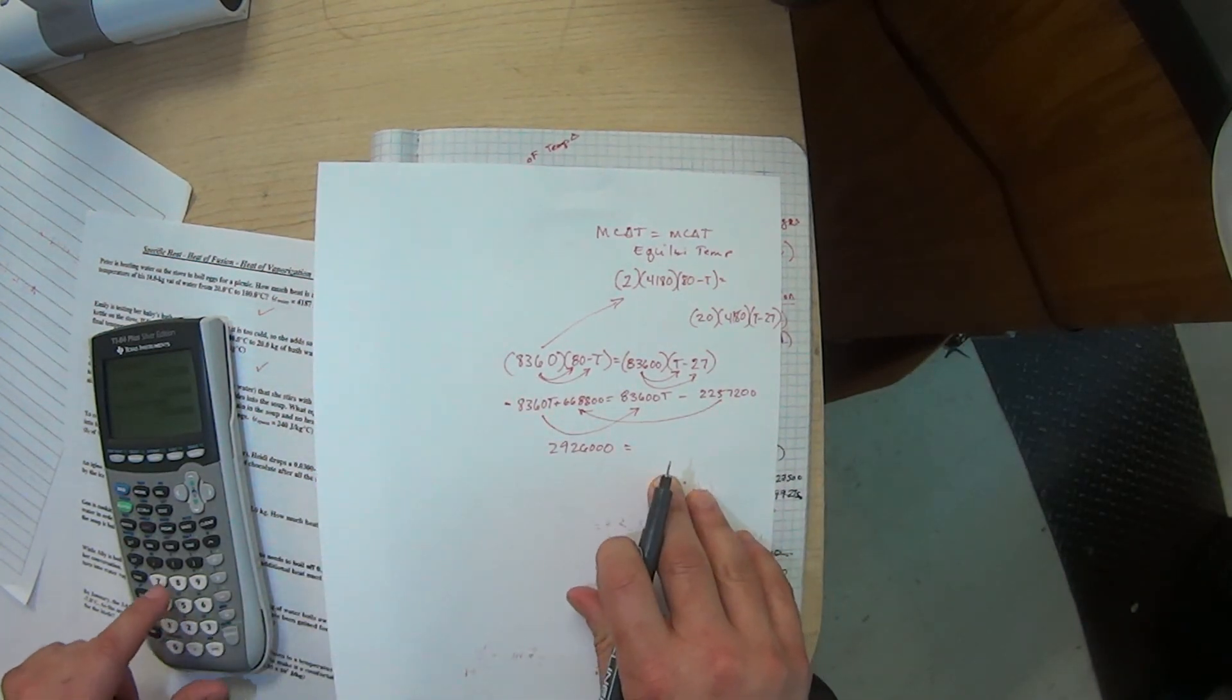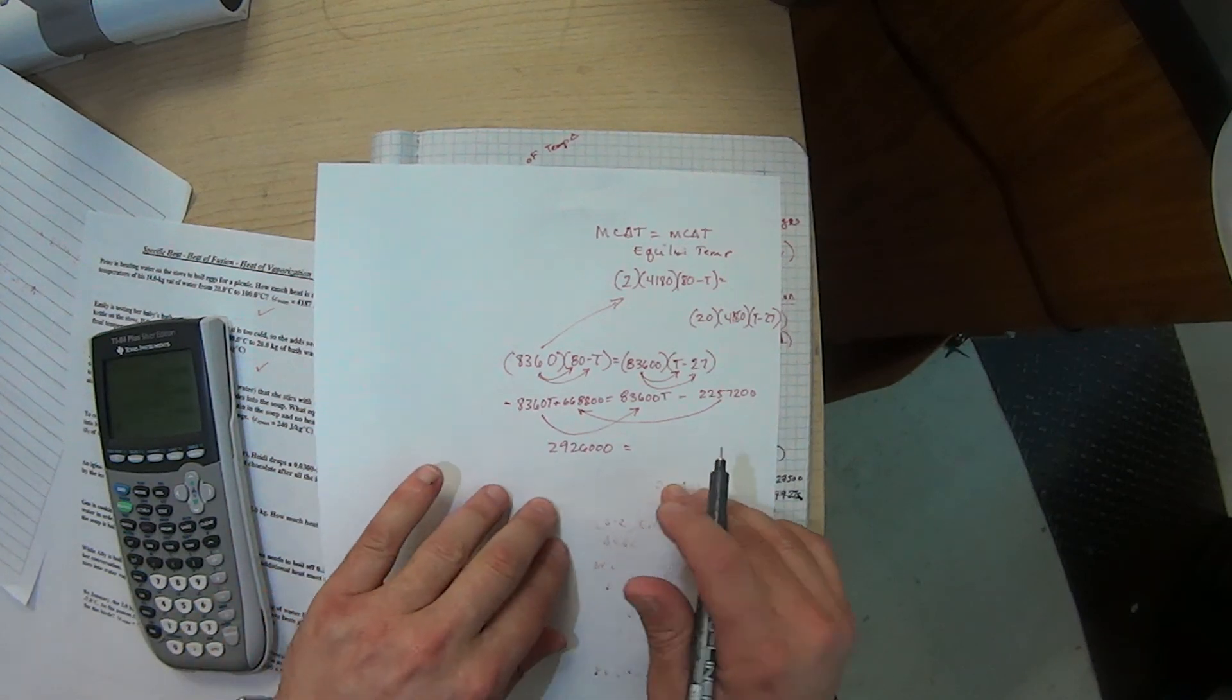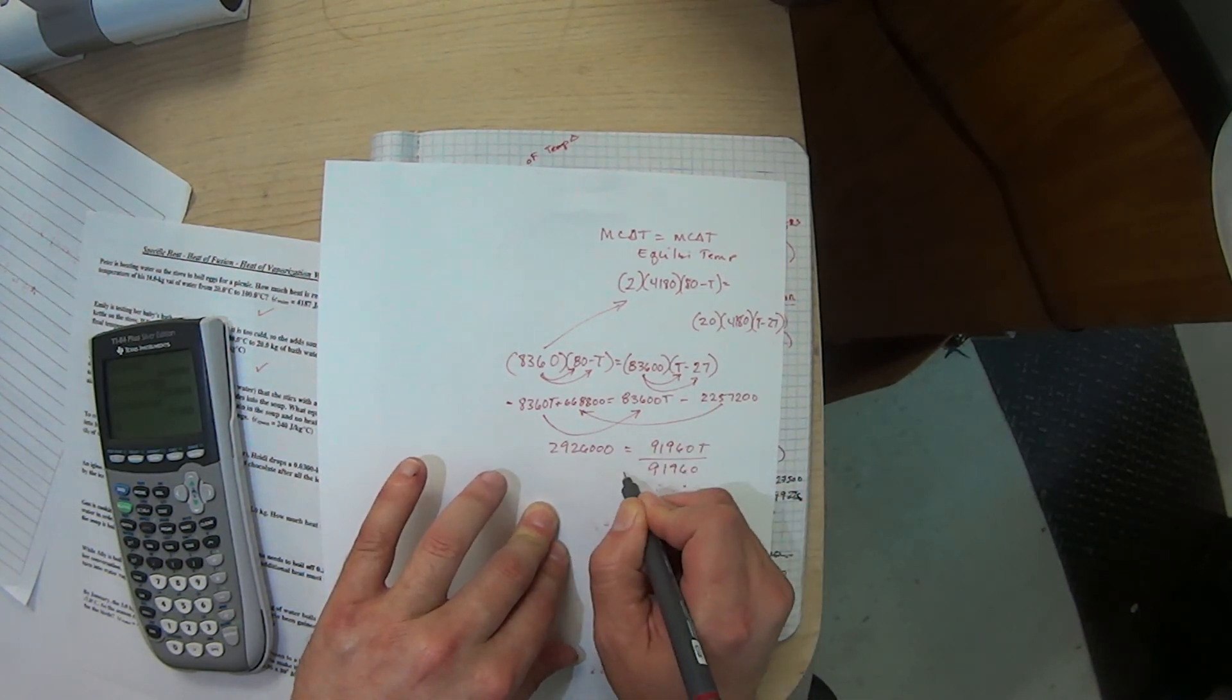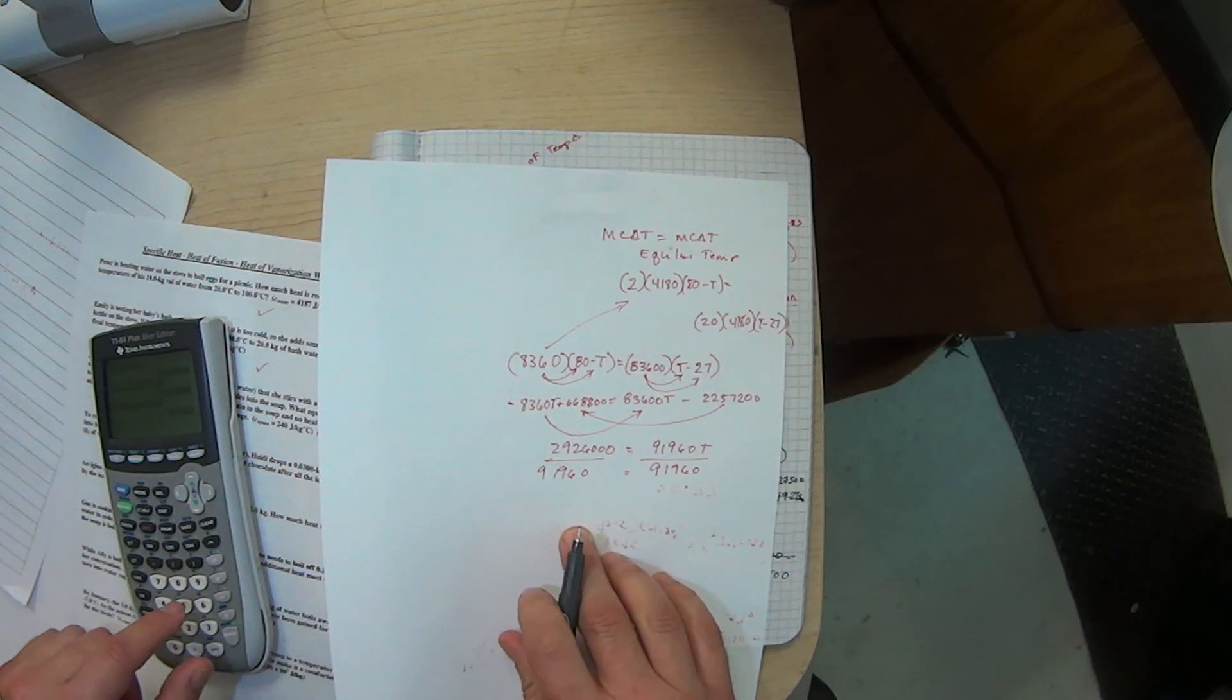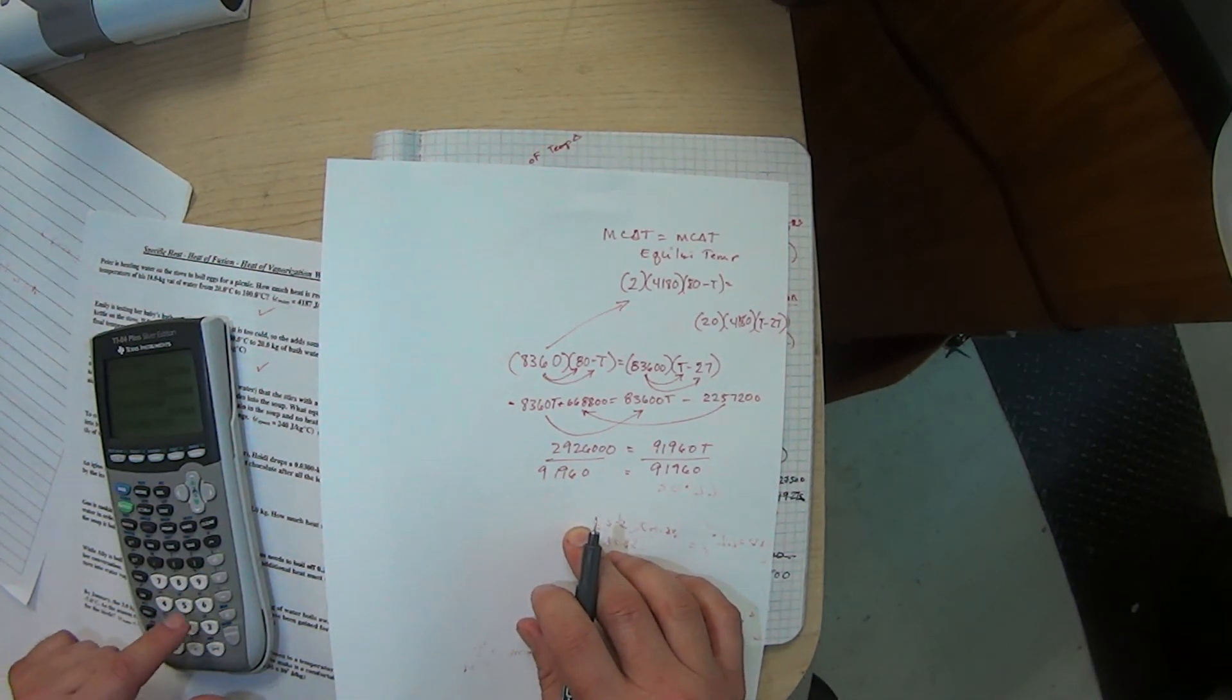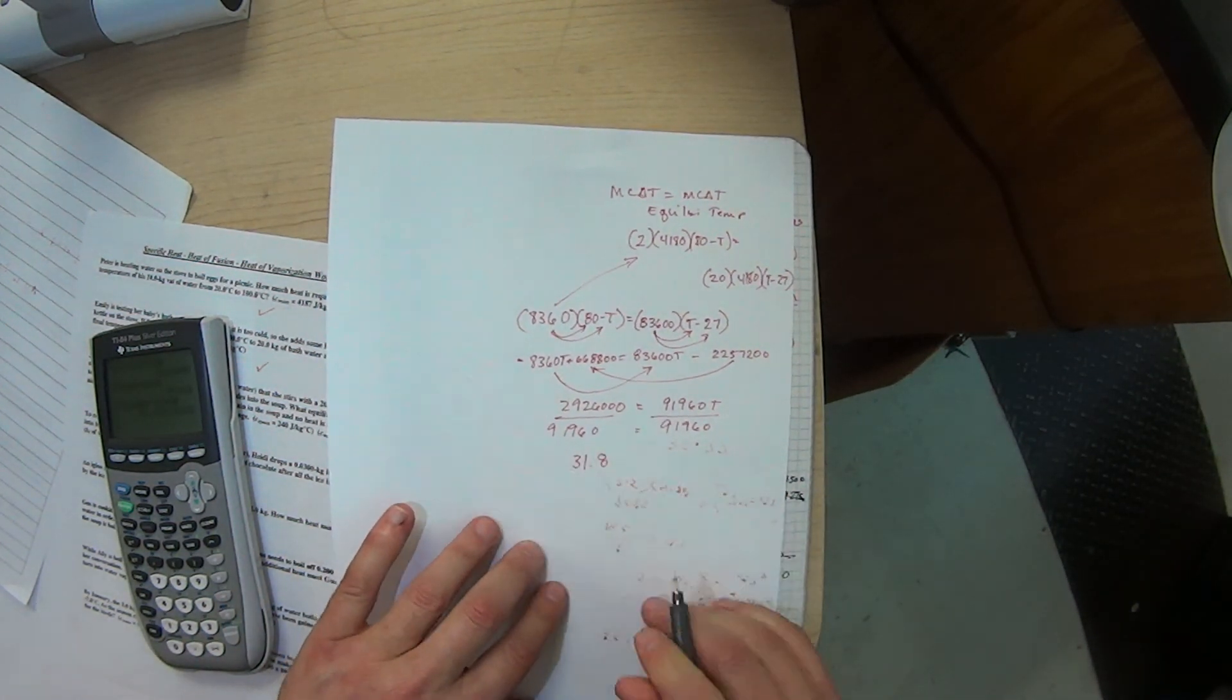And that's got the T. Now I divide out that number, so the 292,600 divided by 9160 equals 31.8, which will be the equilibrium temperature. Alright, I'm going to stop that there and we will do the second half of this review on another video.